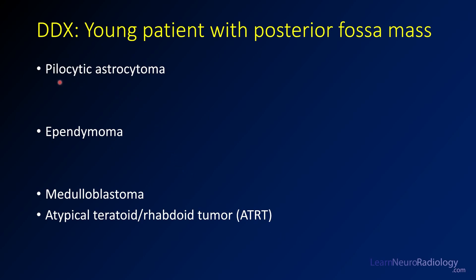When you're thinking about a differential diagnosis of a young patient with a posterior fossa mass, the main things you're thinking about are pilocytic astrocytoma — this is the most common posterior fossa mass in young adults and children. Ependymoma is a very common mass, a little more solid, often described as a toothpaste-like lesion squeezing out of the fourth ventricle and arising within the ventricle. And then there are the more aggressive tumors — medulloblastomas are densely cellular tumors arising in the cerebellum.